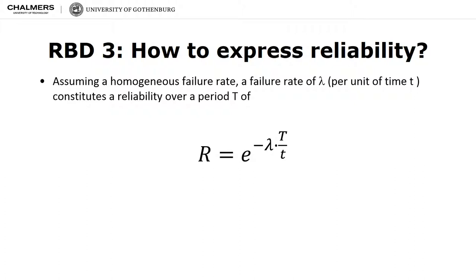The reliability of each component in a reliability block diagram can be given in a variety of ways: either as mean time to failure, as reliability percentage over a period of time, or as a failure rate. We will often use failure rates in this lecture.